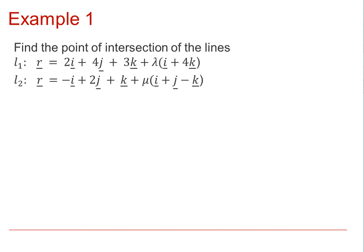then we will remember that just as we looked at in the 2D lines, that the x, y and z components must be equivalent. Therefore, we can set up some equations. For the x component, we have that 2 plus lambda must equal minus 1 plus mu.